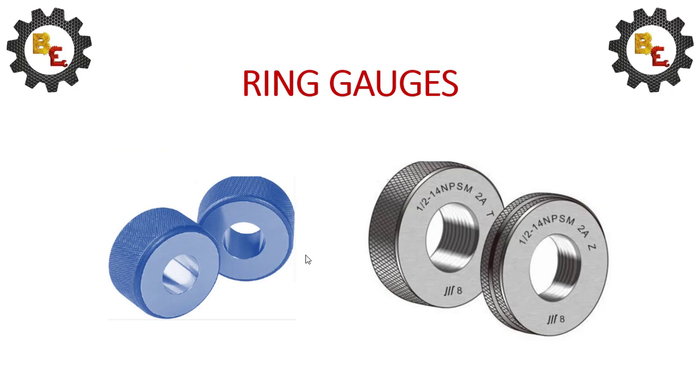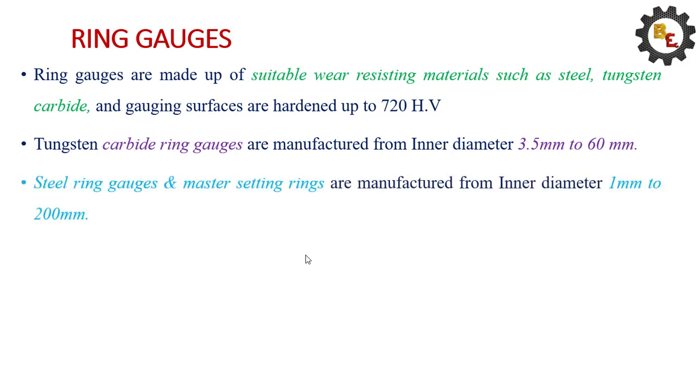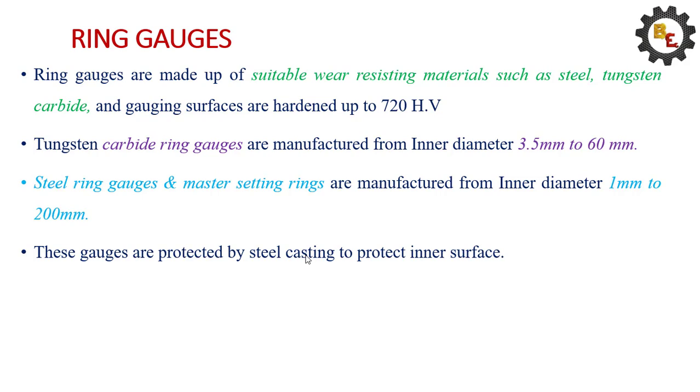Let me see the ring gauges. Ring gauges are made of suitable wear-resisting materials such as steel, tungsten carbide, and gauging surfaces are hardened up to 720 Vickers hardness. Tungsten carbide ring gauges are manufactured from inner diameter 3.5 to 60 mm. Steel ring gauges and master ring gauges are manufactured from the inner diameter of 1 mm to 200 mm. These gauges are protected by steel casing to protect the inner surfaces. These are used to measure the outer diameter of the shaft by inserting the component into the ring gauges.